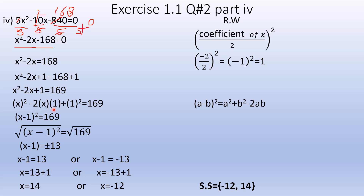Complete square means using the a plus b whole square or a minus b whole square formula. Here a equals x and b equals 1. The formula a minus b whole square expands to a² minus 2ab plus b². So we identify x² minus 2·x·1 plus 1², giving us minus 2ab term.